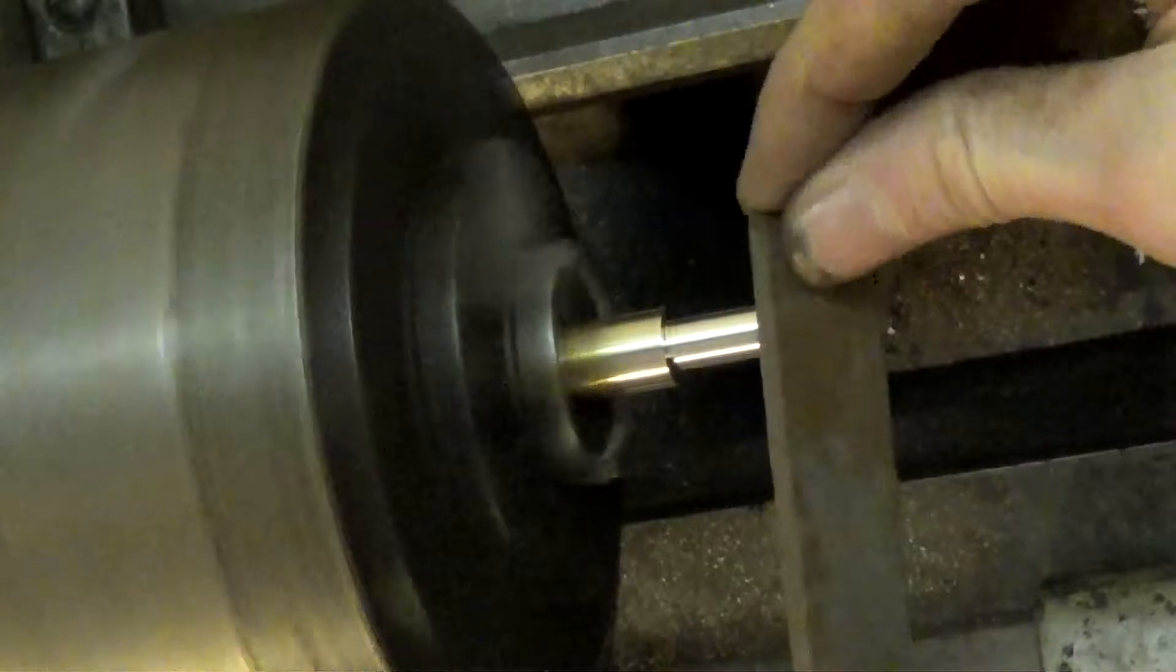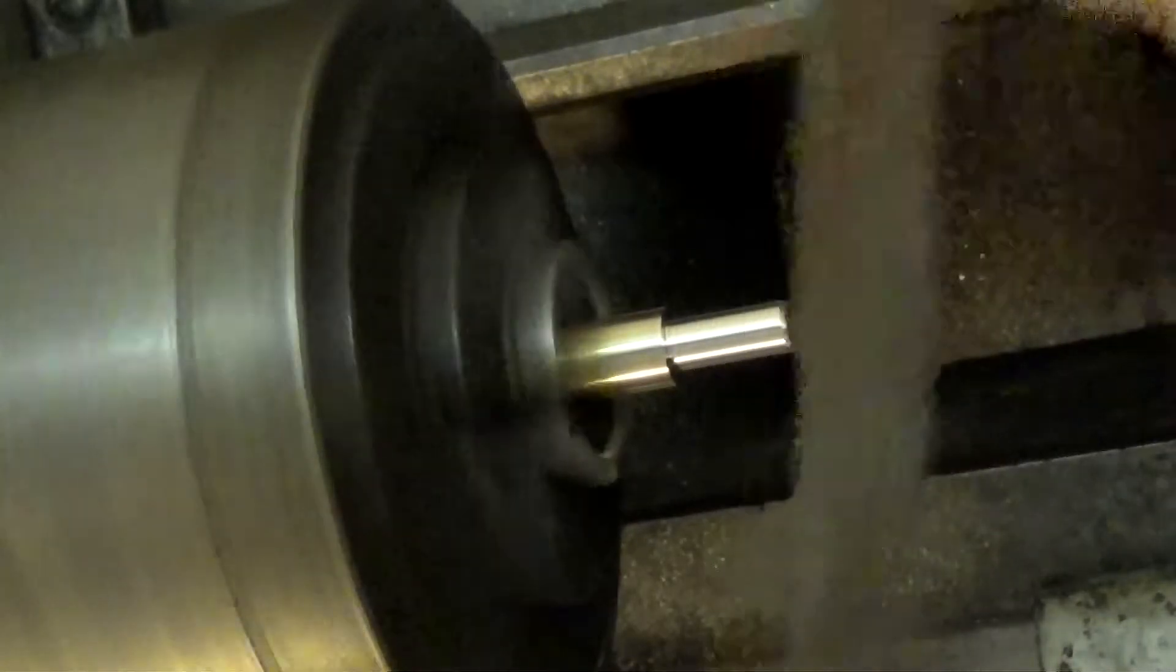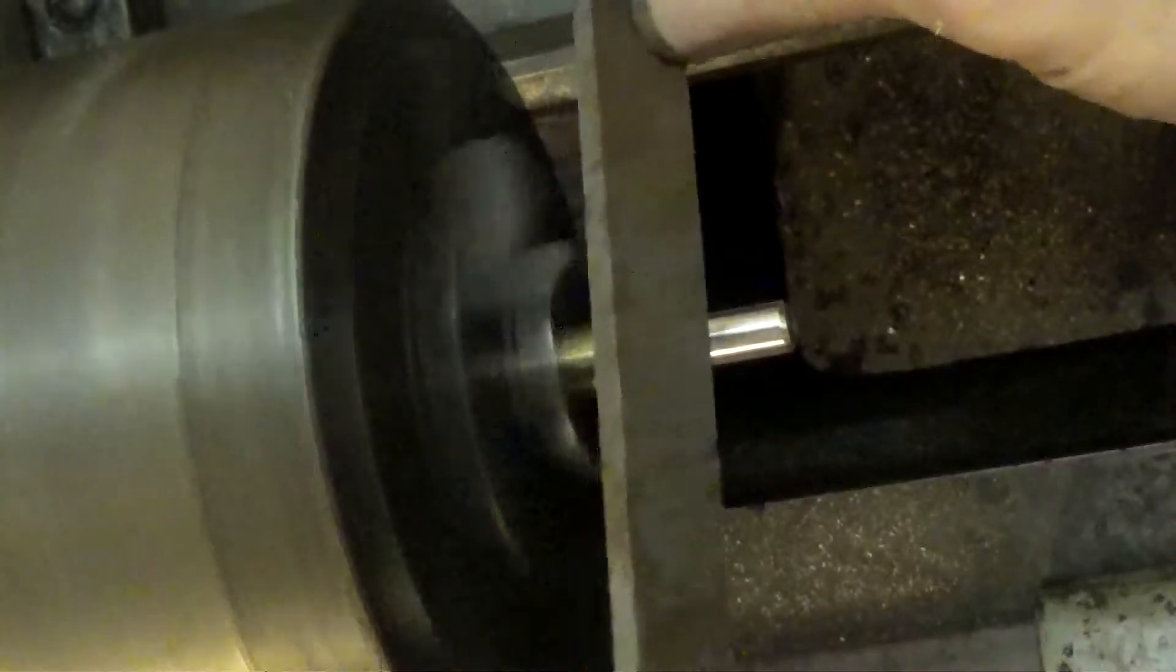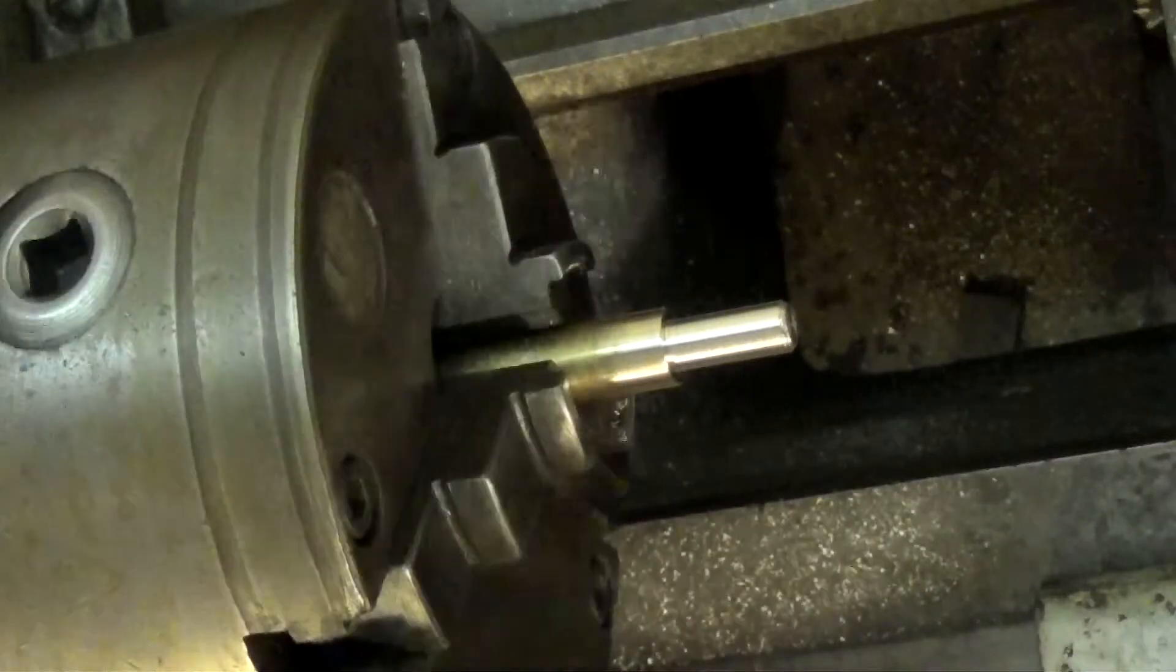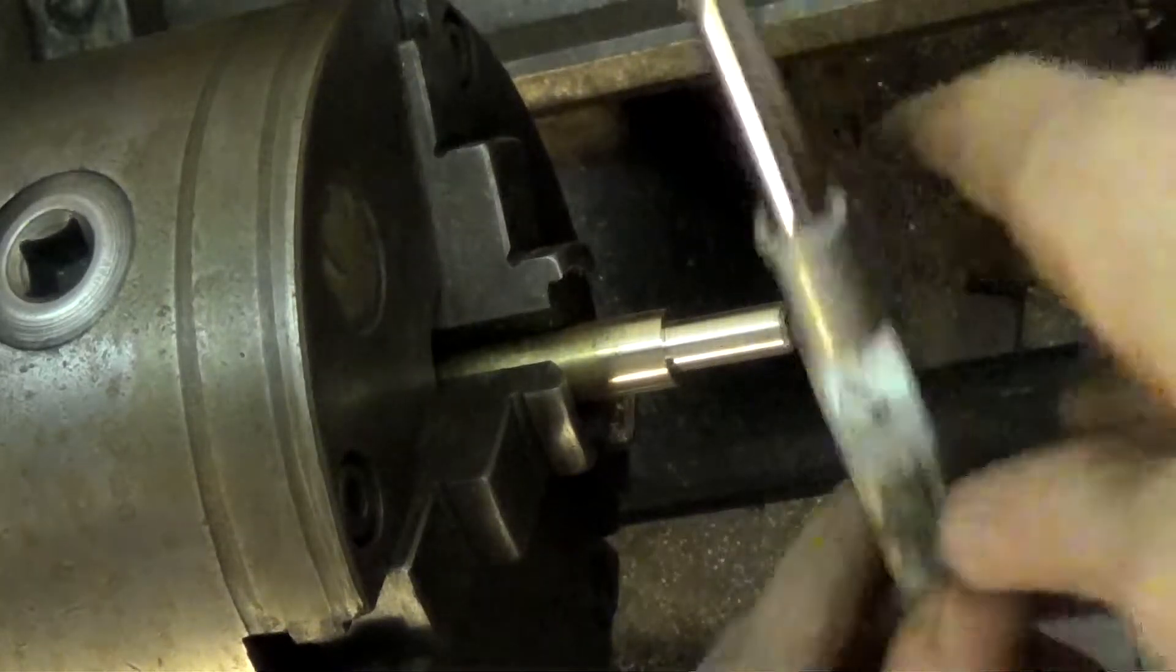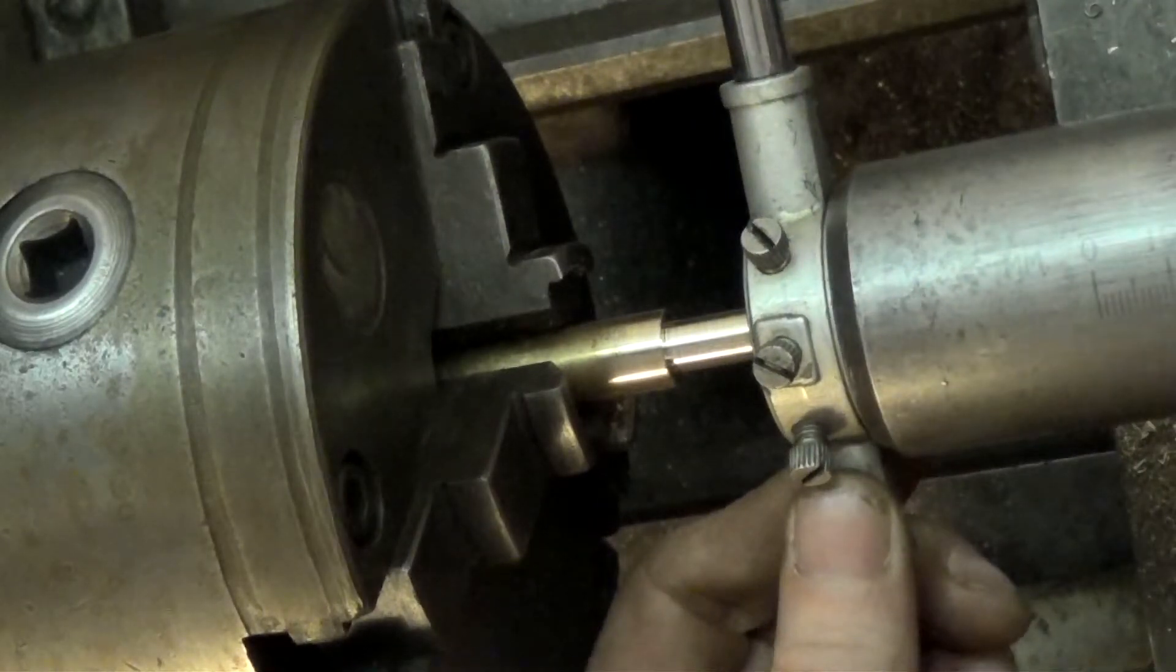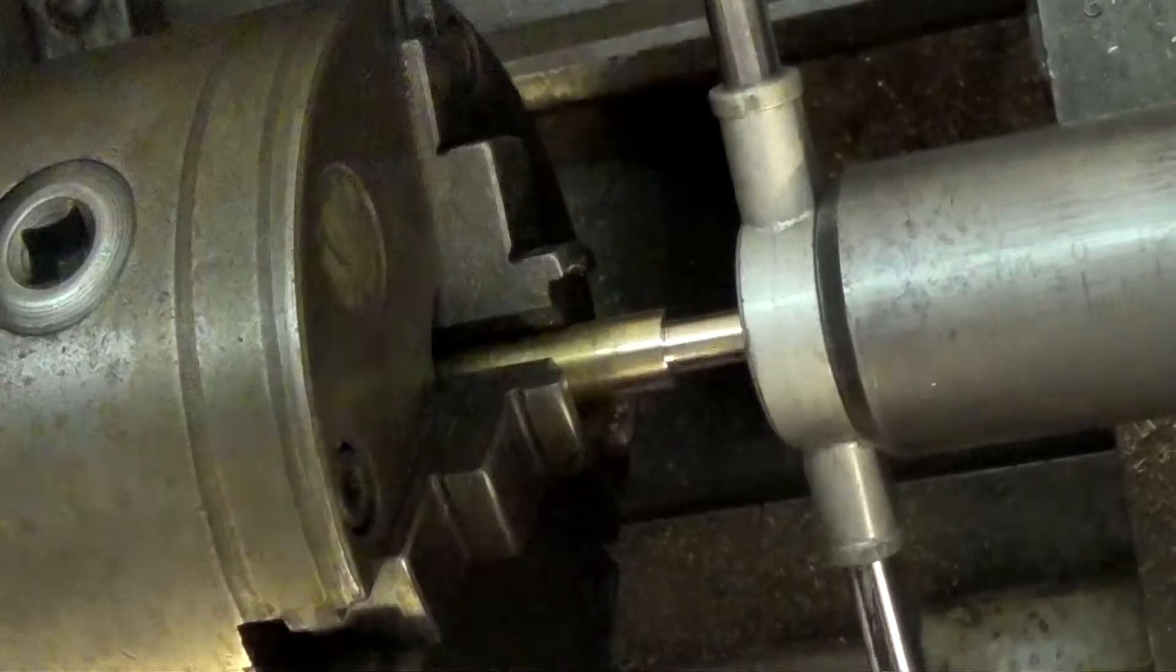Next is a file, just to put a lead on there for the thread. When the die comes in, the thread will start a little bit easier on the end there. So this is the die. I'm using a die because it's an imperial thread and my lathe is metric, or this lathe is metric, and I've got a bit of a change gear issue with the other ones. So turns out I couldn't cut the thread on the lathe.